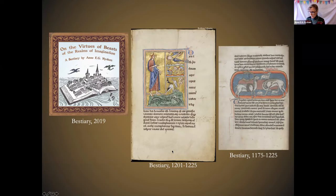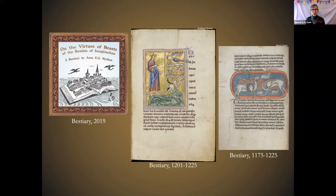In a bestiary, each animal has a description of its appearance, where it lives, some details of its behavior and life cycle, and how it impacts humans — whether it's dangerous or harmful, whether it can be domesticated, how any parts of it might have medicinal or other uses, how to catch and kill it, and so on. There were a number of natural history encyclopedias in the classical era that included all this same sort of stuff, such as Aristotle in the fourth century BCE, Pliny in the first century, and Solinus in the third century. Those encyclopedias were attempts to collect all current knowledge about the natural world and present it systematically — a sort of proto-science.